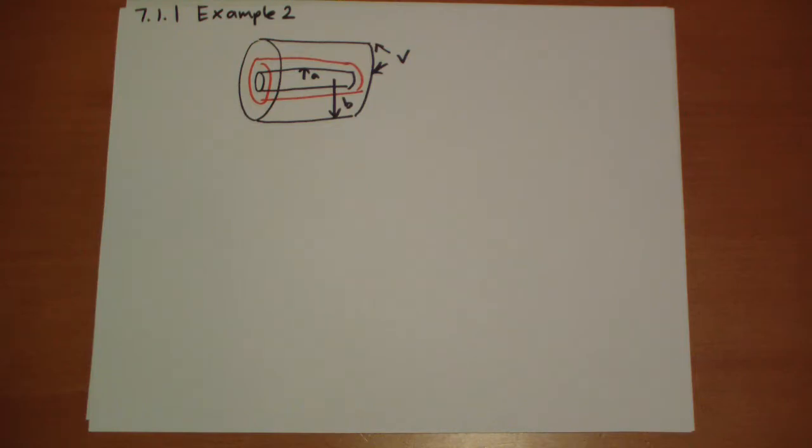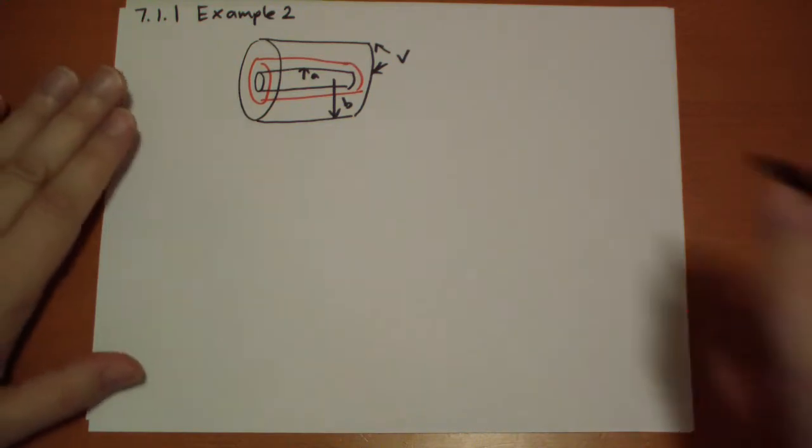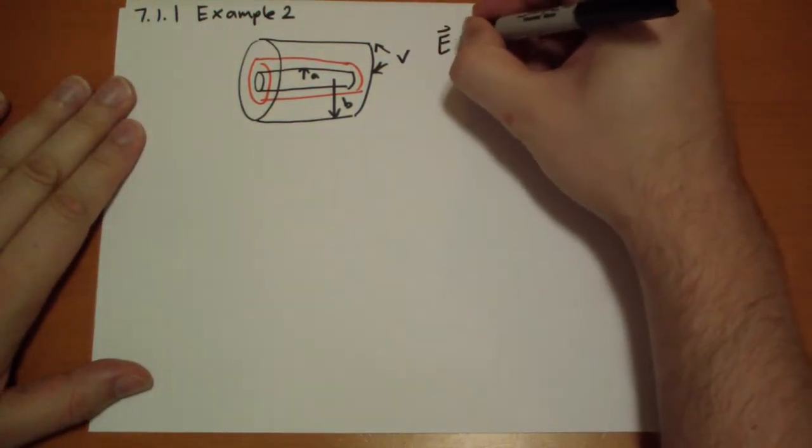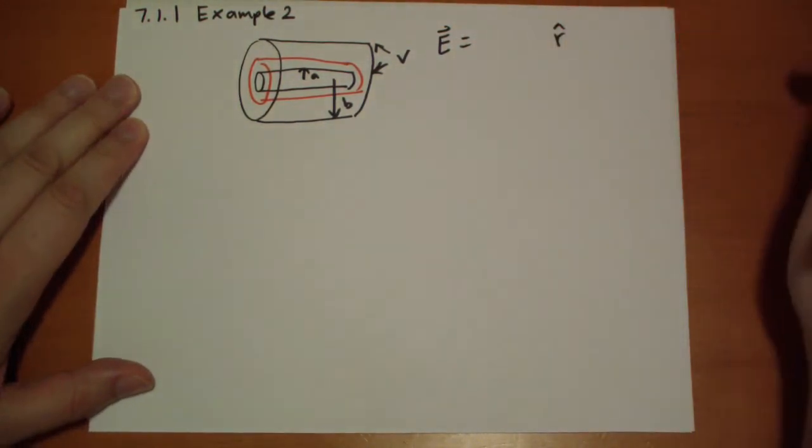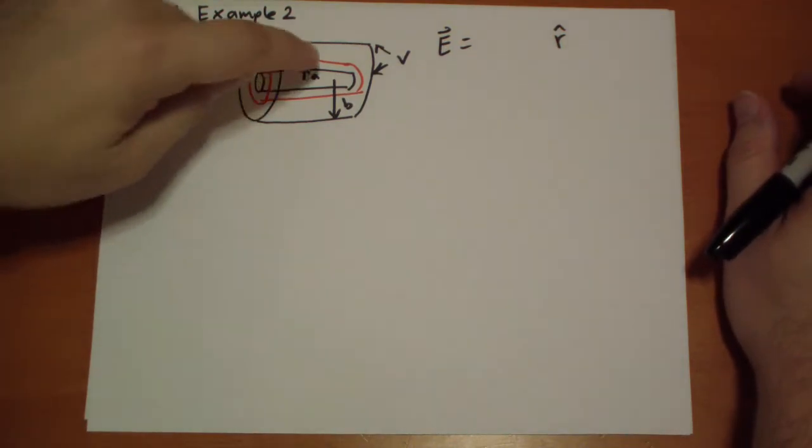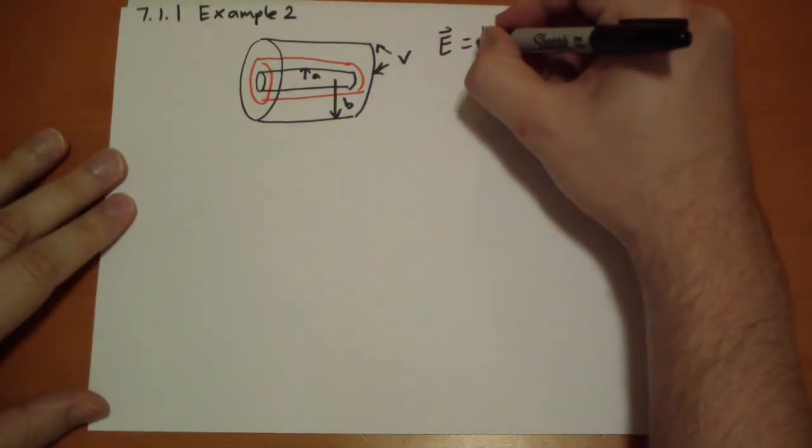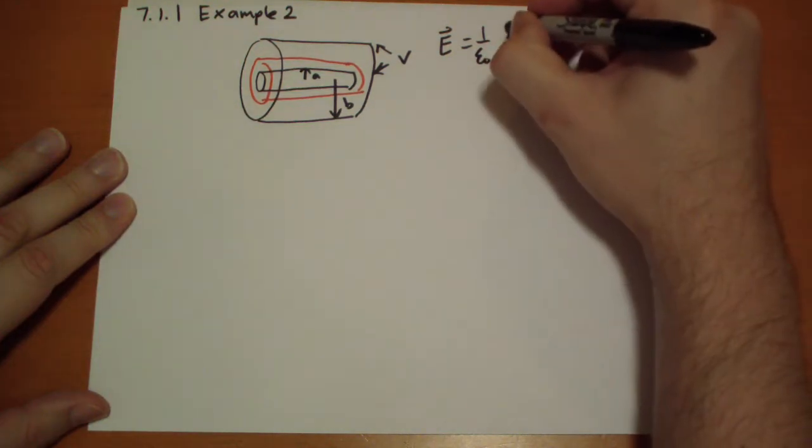And so there's no horizontal component to the electric field because we're dealing infinitely here. So we can calculate the electric field is going to point in the r-hat direction. And it's going to be the charge contained, one over epsilon naught. The charge contained, that's lambda L. Lambda is the charge density per unit length.